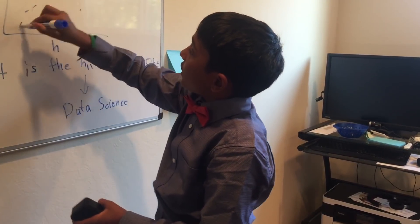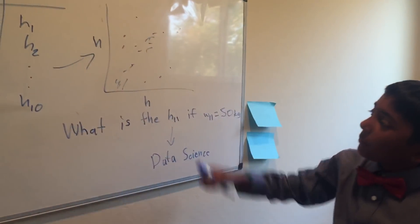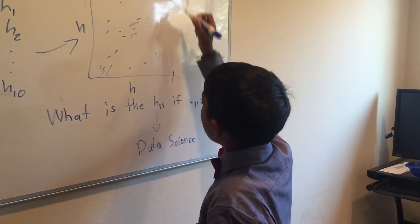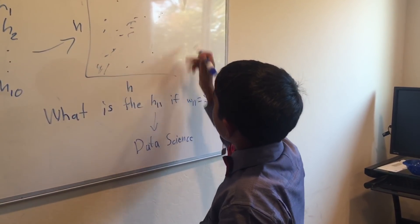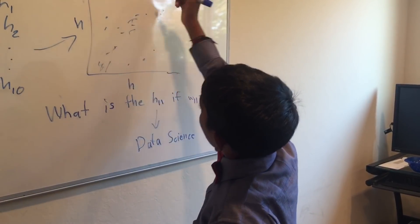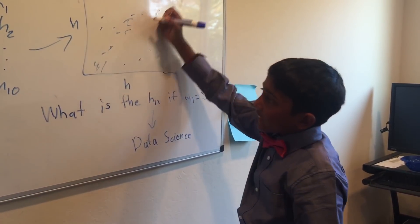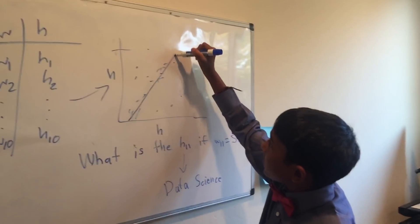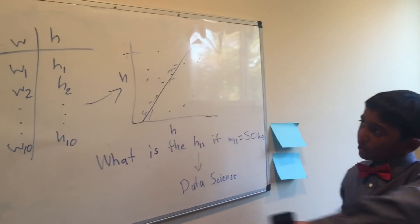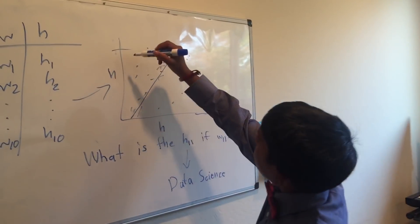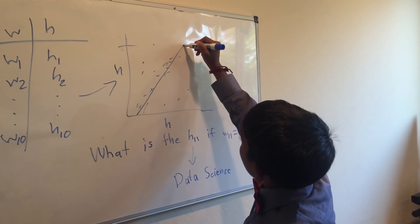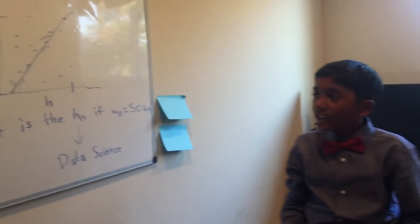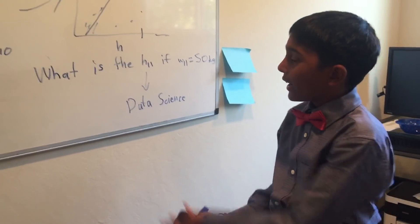So person 11 has this weight, and you want to predict their height. Just to make it simple, I'm just gonna put a line. So then the dot would be here and the height would be over here.